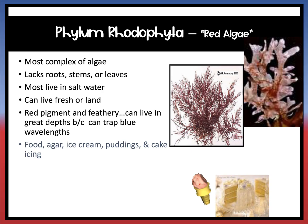The next phylum is phylum Rhodophyta, your red algae. This is one of the most complex algaes. They don't have root stems or leaves, mostly live in salt water, but can survive in fresh water. They have a red pigment and are feathery-looking. They are found in food sources — in agar, which we use to grow bacteria, in ice cream, puddings, and anything that's thick and jelly-like.